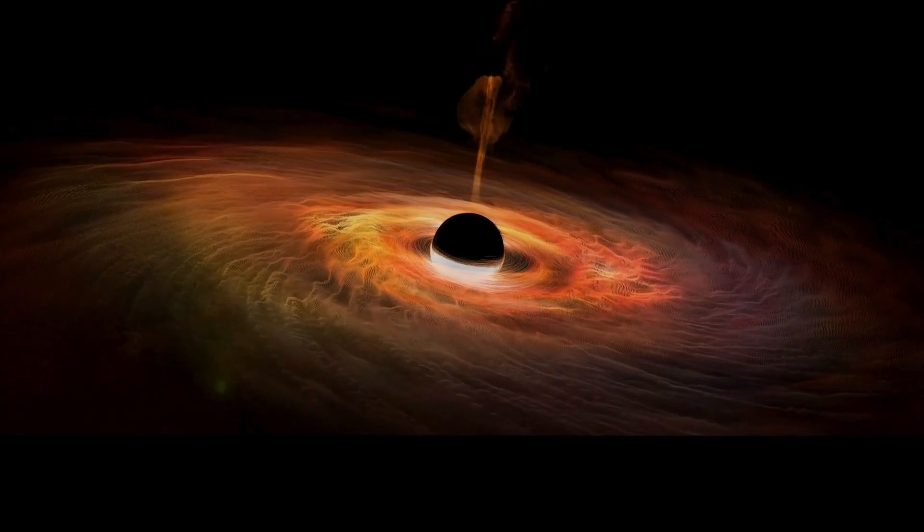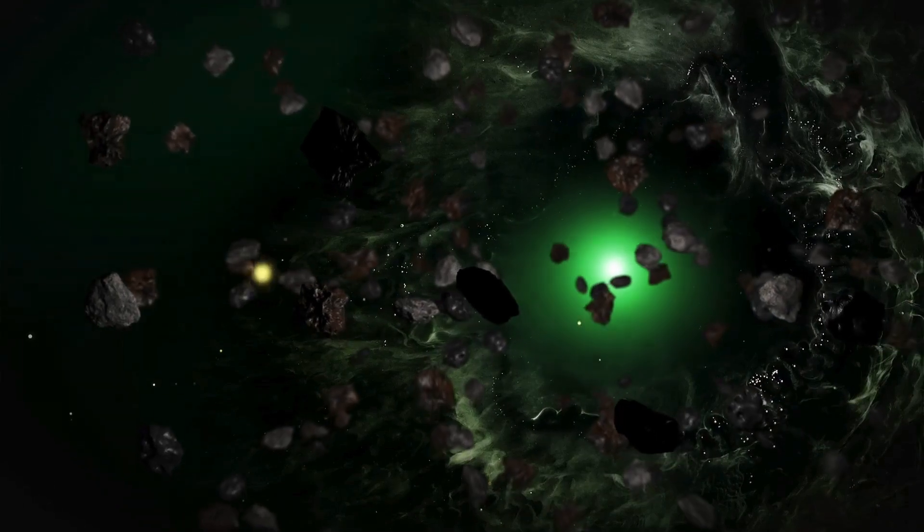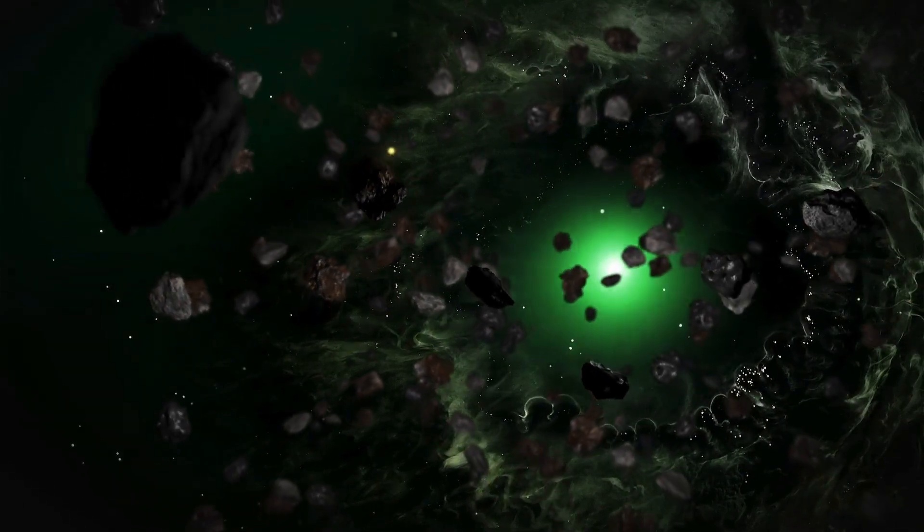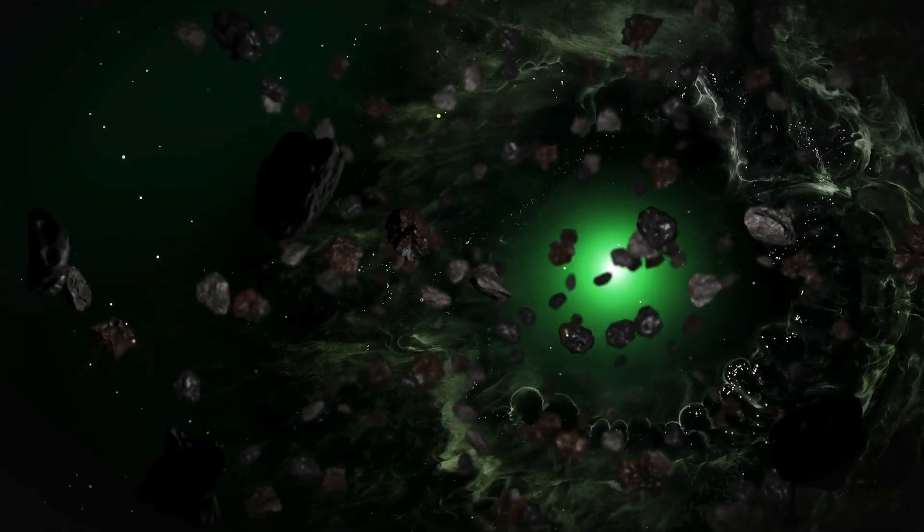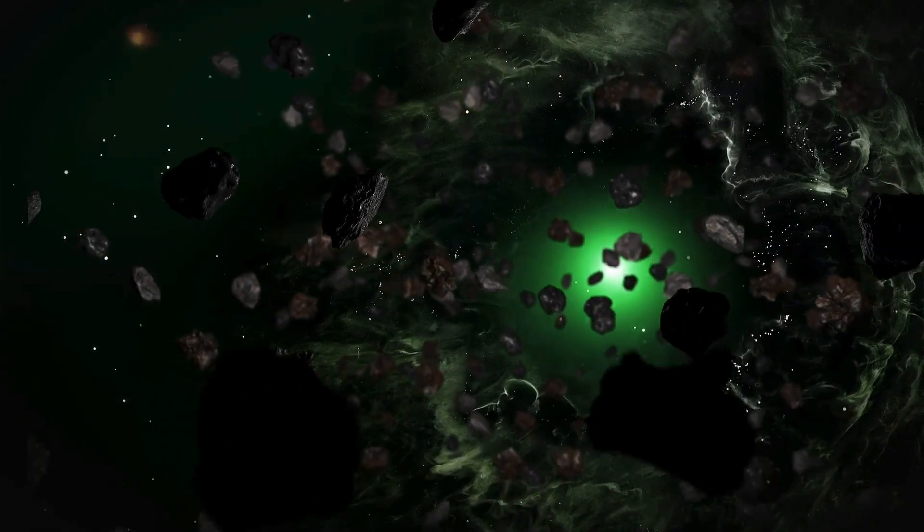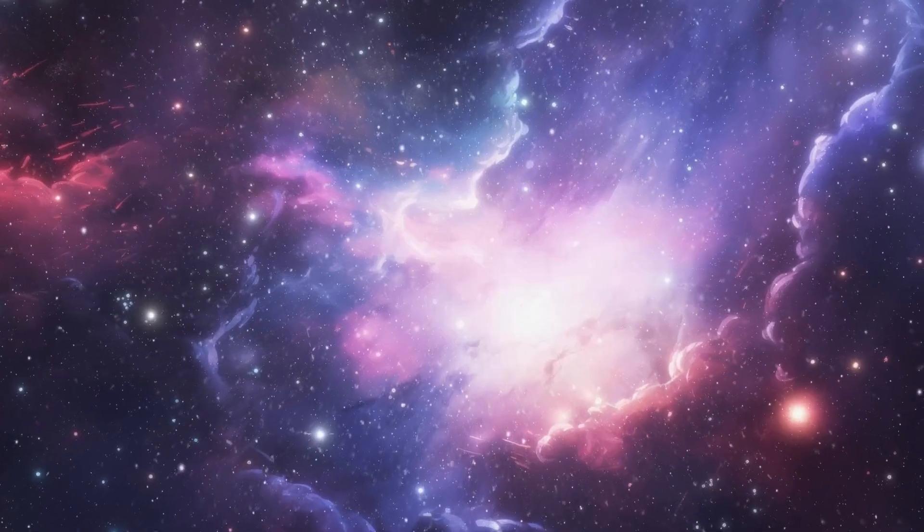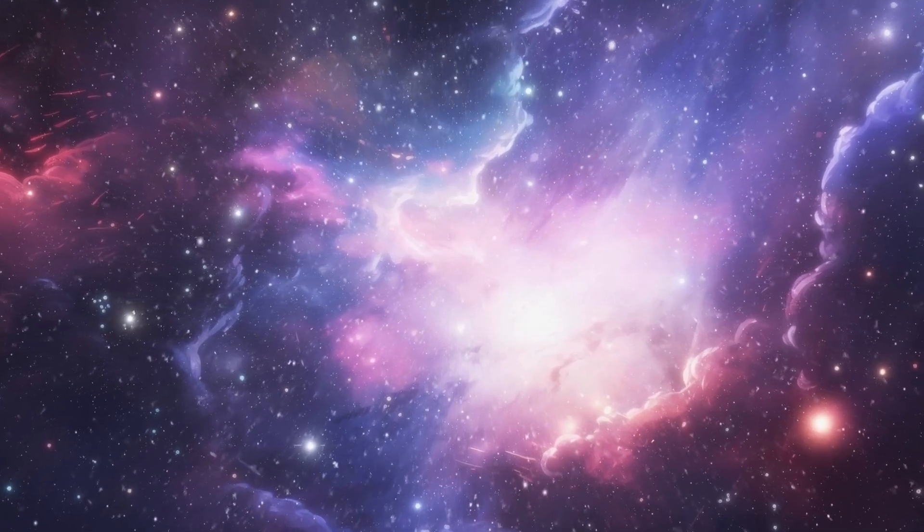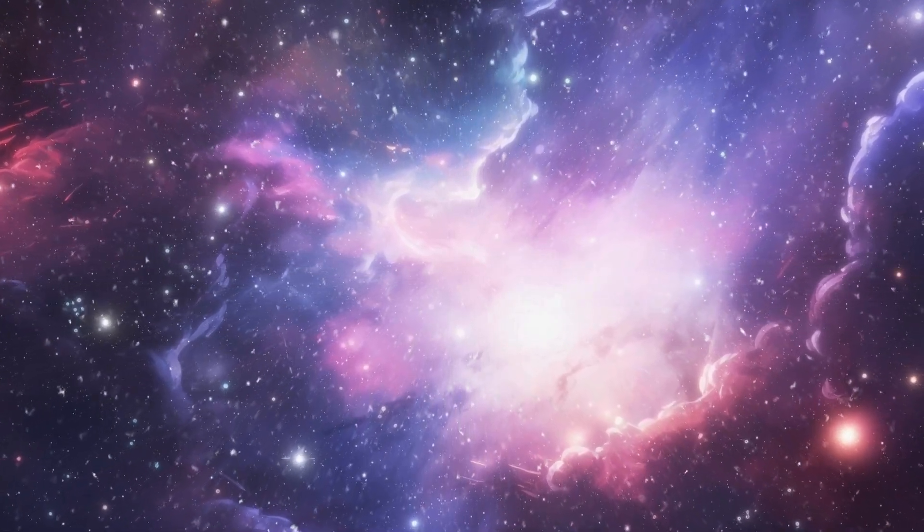However, the spacecraft were sent on a new trajectory beyond the confines of our solar system, traveling at an astonishing speed of 325 million kilometers per year. In January 1990, the interstellar mission began, with Voyager 1 continuing its celestial journey.